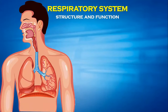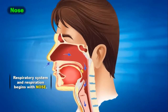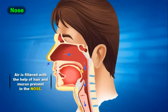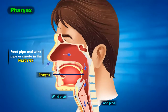Now let's look at the respiratory system structure and function. On the screen you can see the respiratory system. First is the nose — respiration begins with the nose. Air is filtered with the help of hair and mucus present in the nose, so clean air goes inside your body. Then comes the pharynx — the food pipe and wind pipe originate in the pharynx.